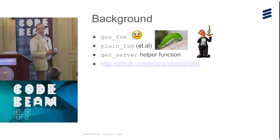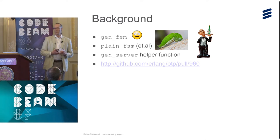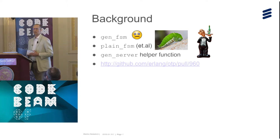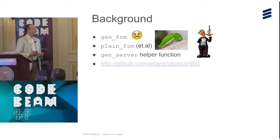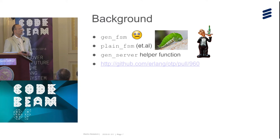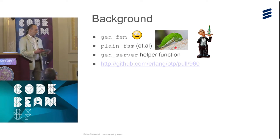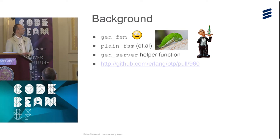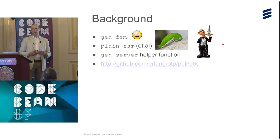gen_fsm was considered hard to use. There were suggestions — for instance, plain_fsm by Ulf Wiger, which used a parse transform around receive statements to automate handling of system messages. I myself tried to use gen_fsm in a project but gave up. I used gen_server with a helper function instead, which did some of what gen_statem does today. That solution actually runs in an Ericsson product now delivered.